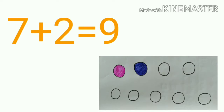Here you can see, out of 9 circles, 2 circles are shaded and 7 circles are unshaded. So we can add 7 plus 2 is equal to 9.